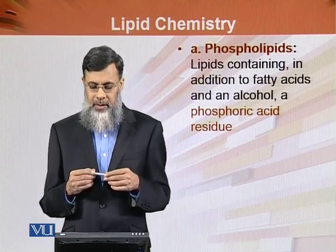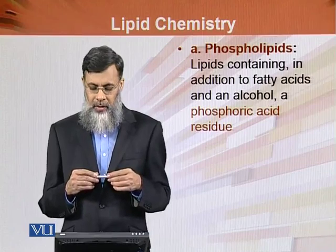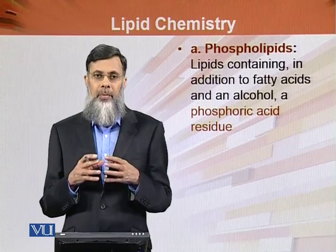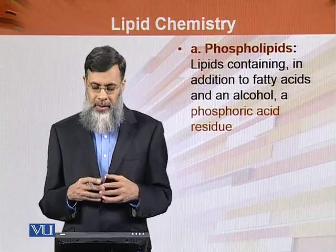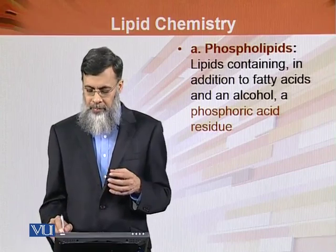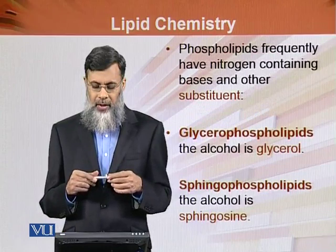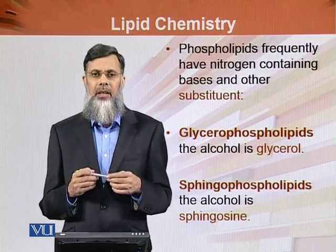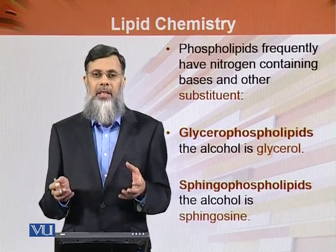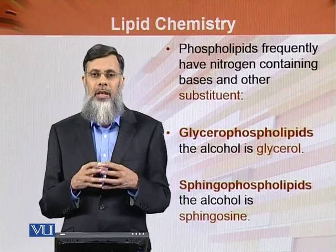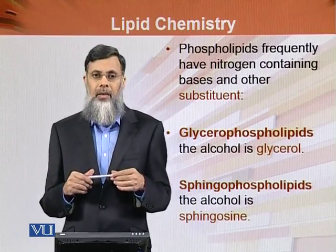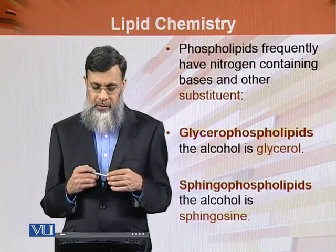Phospholipids are lipids containing, in addition to fatty acids and an alcohol, a phosphoric acid group or phosphoric acid residue attached. These are esters of fatty acids with alcohol where phosphoric acid is also attached. Phospholipids frequently have nitrogen-containing bases and other substituents. If the alcohol is glycerol, these are called glycerophospholipids; if the alcohol is sphingosine, these are known as sphingophospholipids.